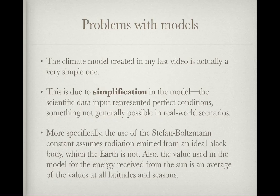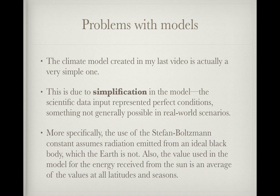Problems with Models. The climate model created in my last video is actually a very simple one, due to simplification of the model. The scientific input represented perfect conditions, something not generally possible in real-world scenarios. More specifically, the use of the Stefan-Boltzmann constant assumes radiation emitted from an ideal black body, which the Earth is not. We have oceans and continents. Also, the value used in the model for the energy received from the sun is an average of all the values at all latitudes and at all seasons.